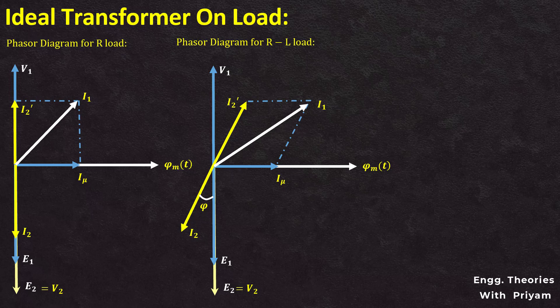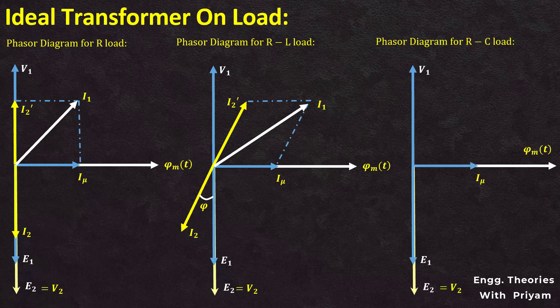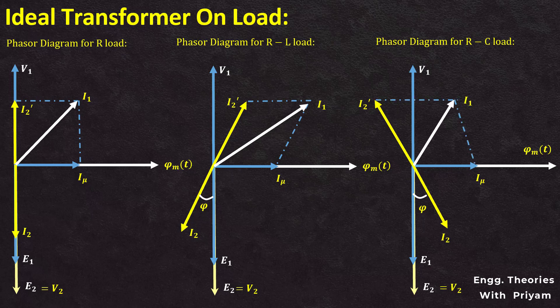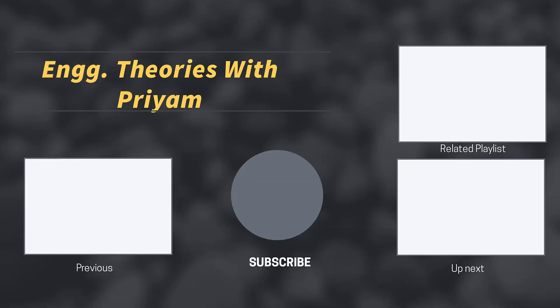If the load is capacitive or an RC load is connected across the secondary, then the secondary current I2 will lead the secondary EMF E2 by an angle of phi. As the additional current I2' is exactly opposite to the secondary current I2, it will lead the supply voltage V1 by an angle of phi. Based on the value of K, either I2' or I2 will be greater, and by the vector sum of magnetizing current I mu and additional current I2' we can determine the primary current I1. This concludes our discussion for this lecture. If you have any questions regarding this presentation, feel free to post them in the comment section, and don't forget to hit the subscribe button.